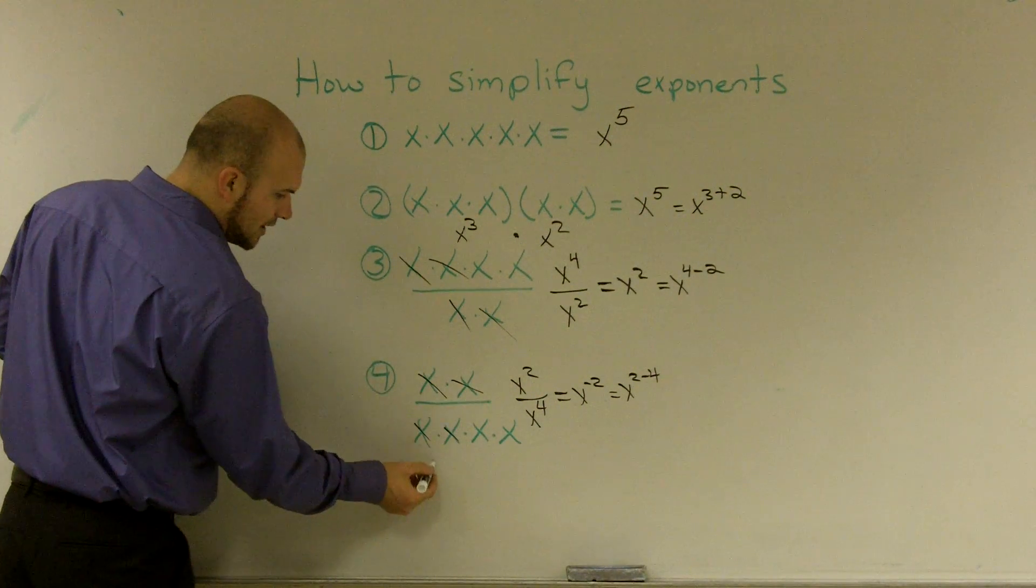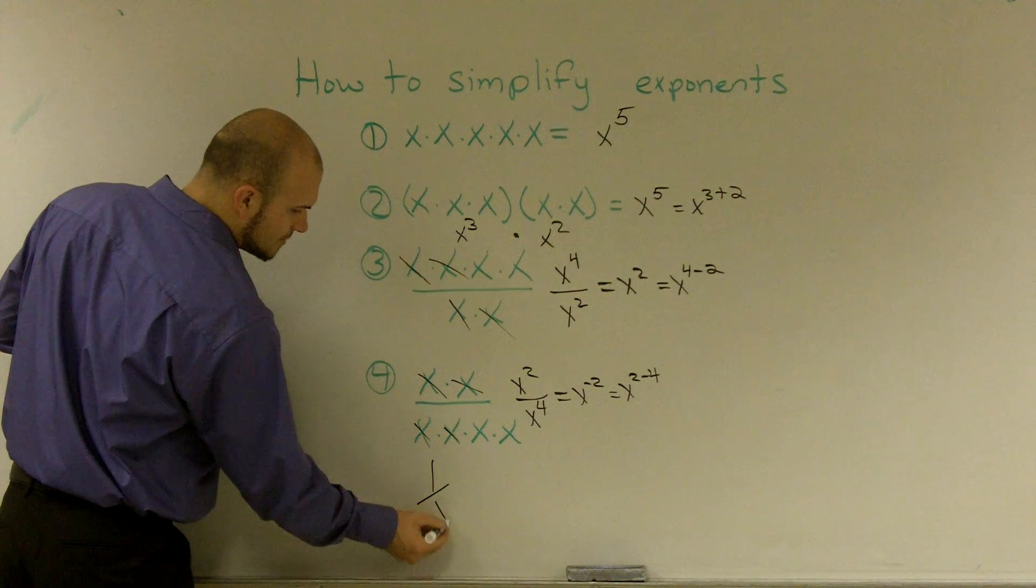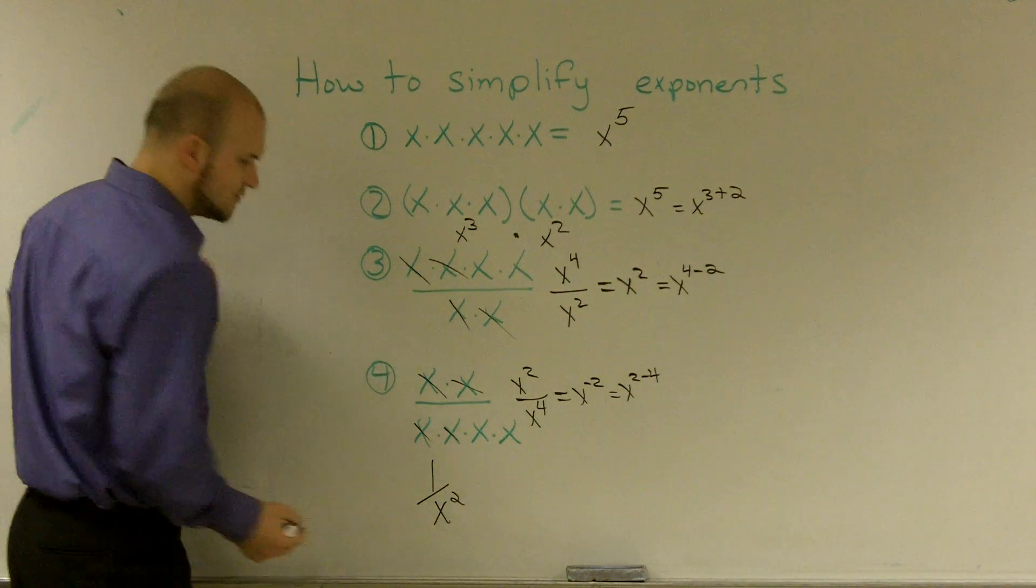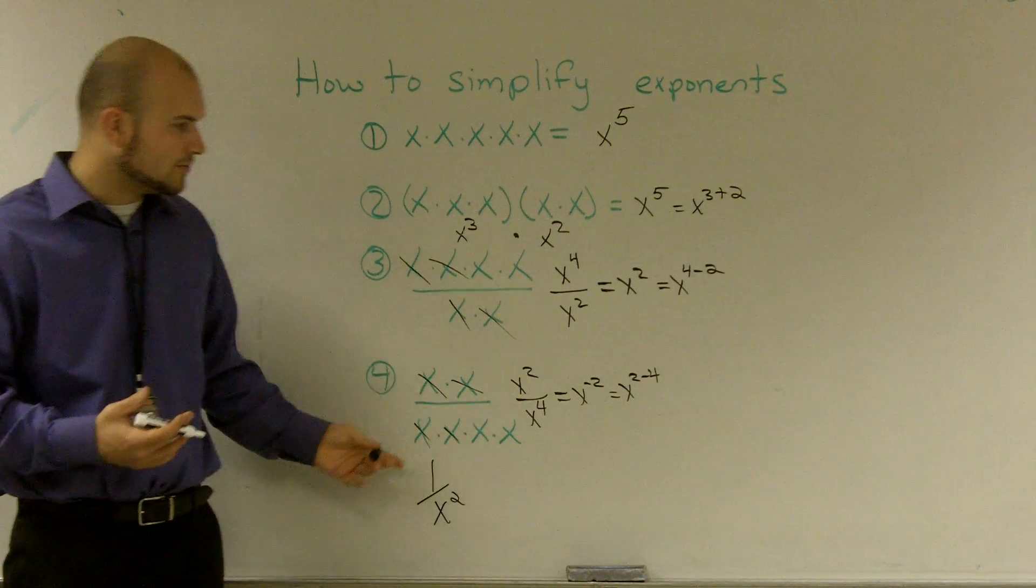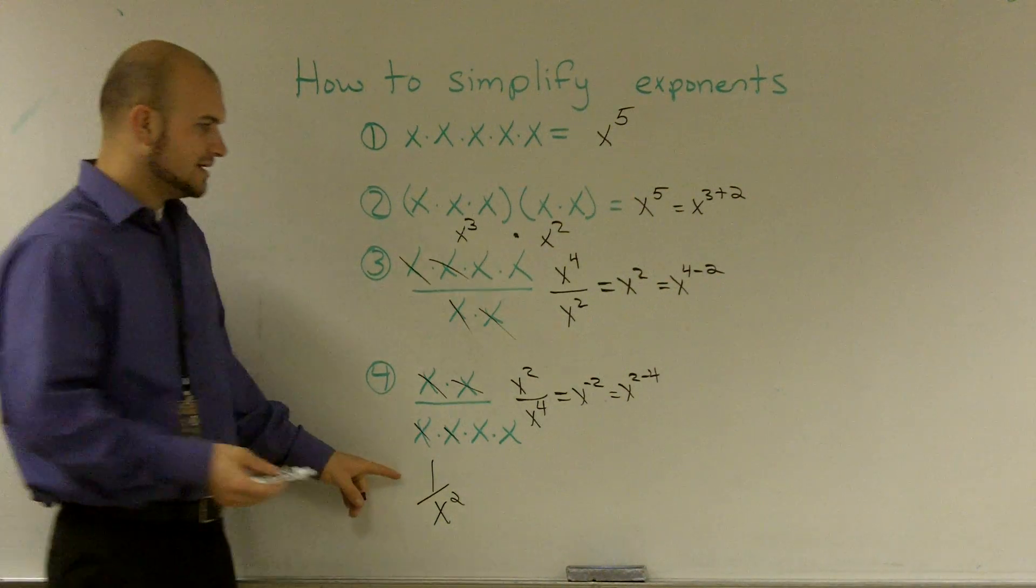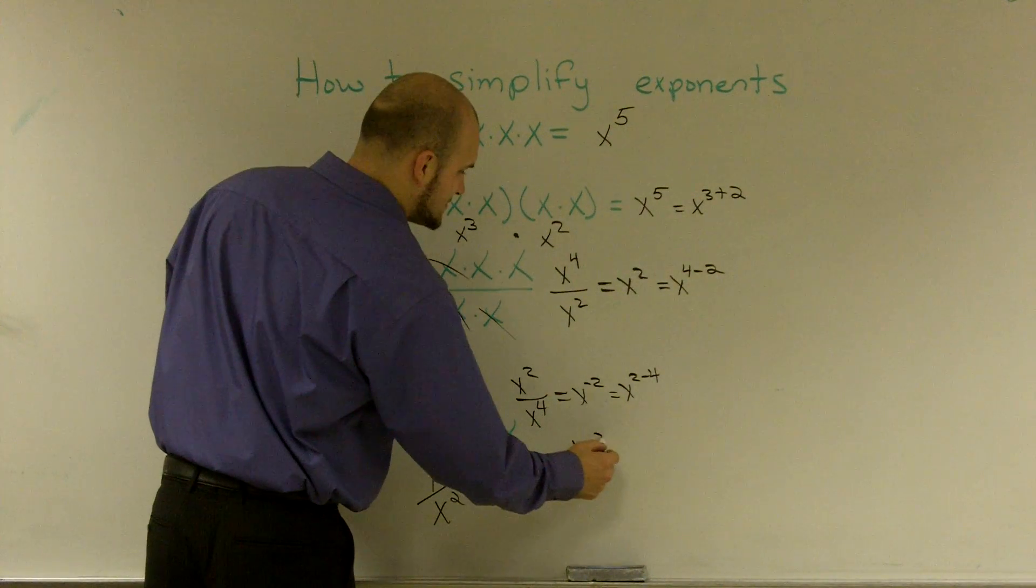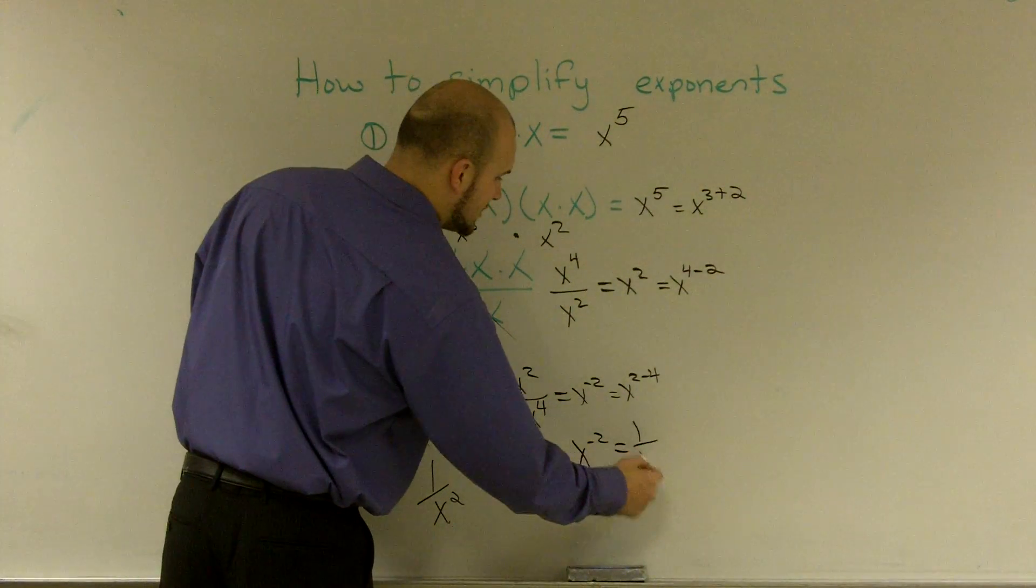So where are you getting your negative 2? Well, one thing we're going to learn is x to the negative 2 is equal to 1 over x squared.